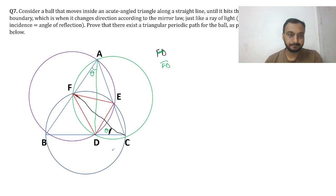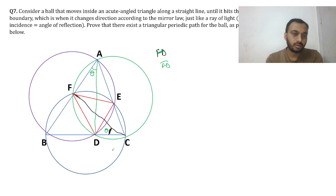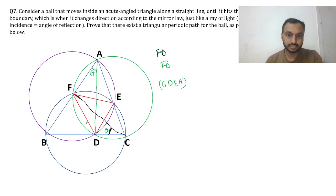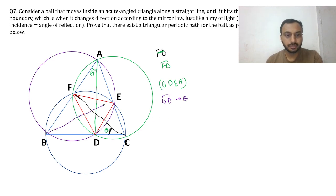Now considering the purple circle through B, D, E, A: arc BD makes angle theta at A. By the inscribed angle theorem, the same arc BD also makes angle theta at E — so angle BEA in the purple circle also equals theta.